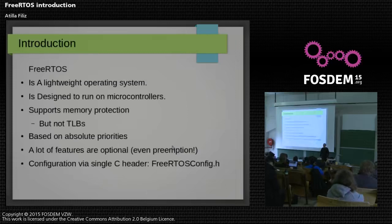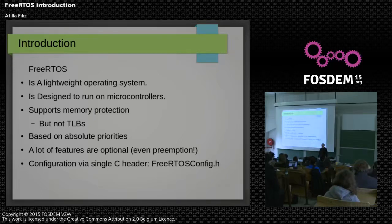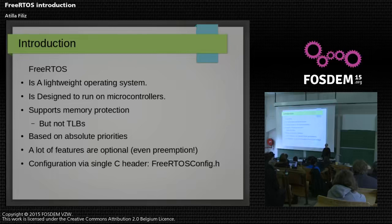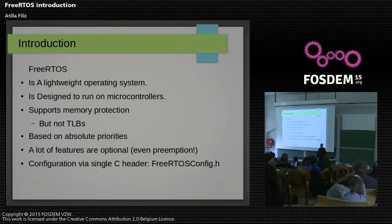FreeRTOS is a pretty lightweight operating system. It's designed to run on microcontrollers, and just the operating system itself takes 5 to 10 kilobytes in flash and about 300 bytes of RAM. It does support some memory protection if your CPU core supports it, but it doesn't do any address translation, so no TLBs. It puts tasks in absolute priorities, meaning a higher priority task always preempts a lower priority task. Even preemption is optional, so you can slim it down to pretty small sizes, and all configuration is done by a C header — basically a bunch of defined symbols.